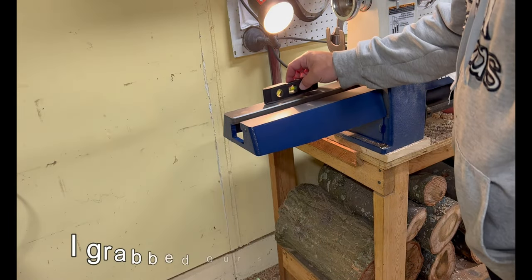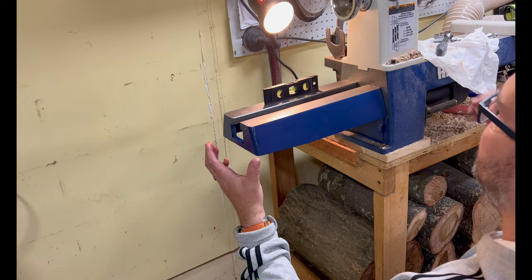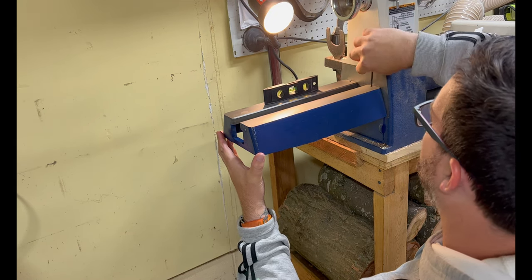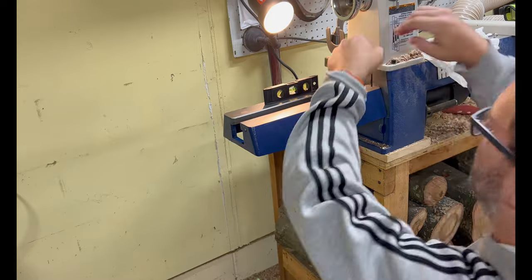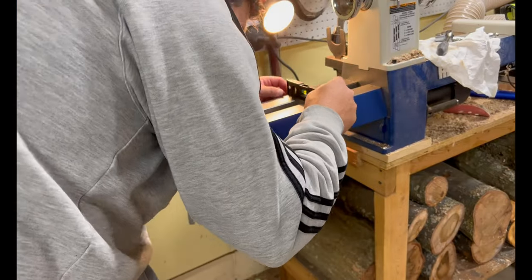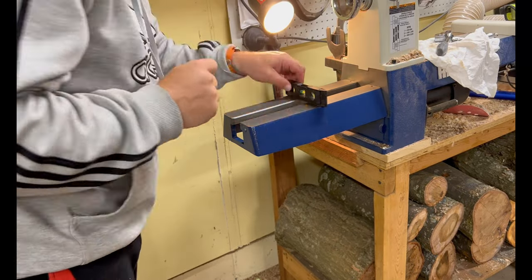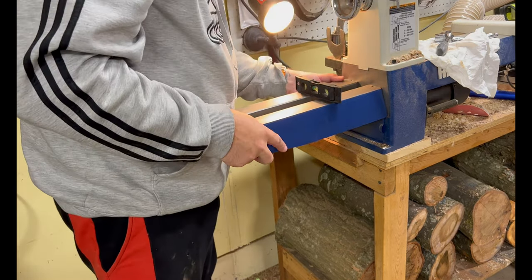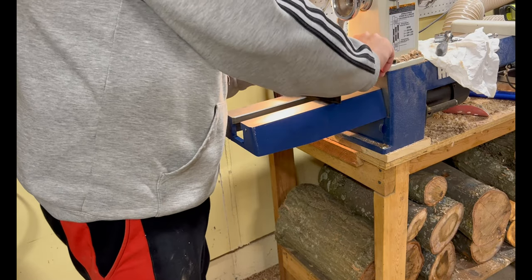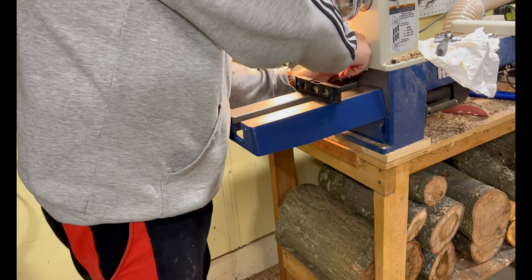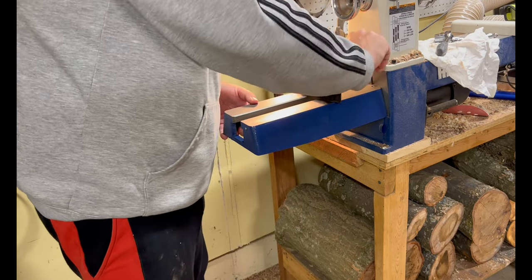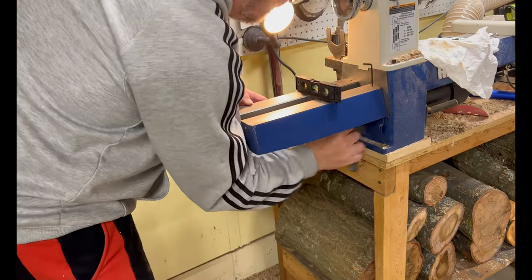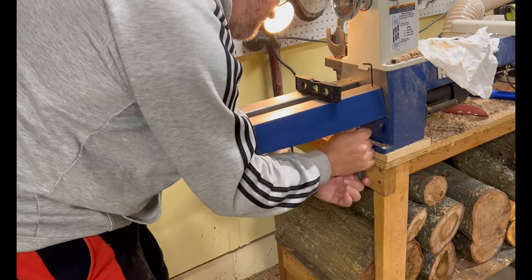We're going to grab our small level here and place it on, and then using these two allen holes over here we will make sure this thing stays level. It shouldn't take much. We'll get this guy on tight. There we go. Now we have our wing.